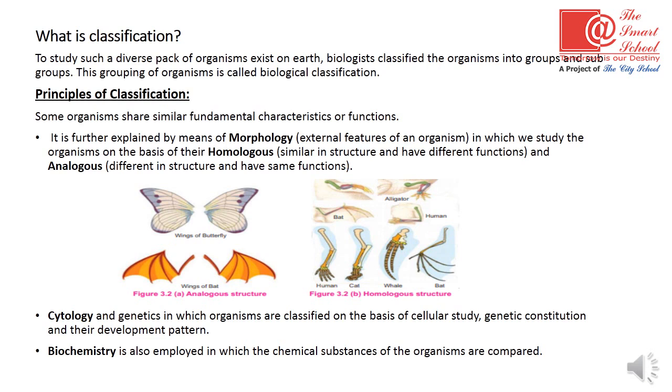In analogous features, the structure is different but the function is similar — for example, a bat and a butterfly both have wings that are totally different in structure but perform the same function of flying.